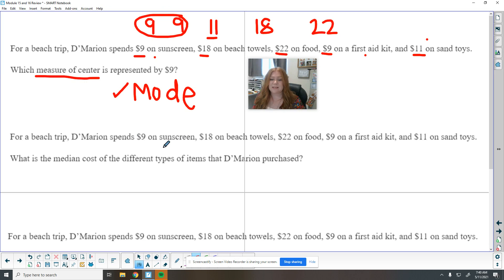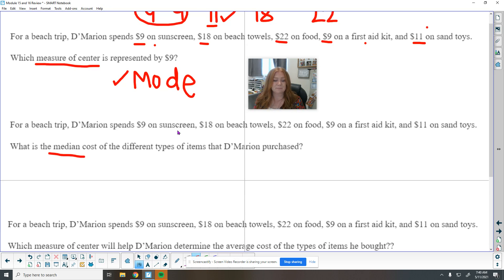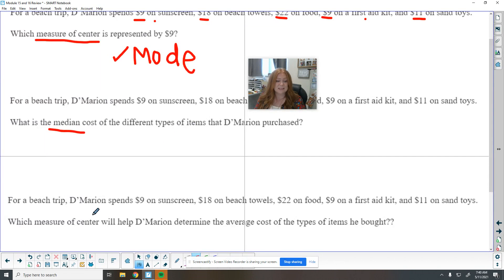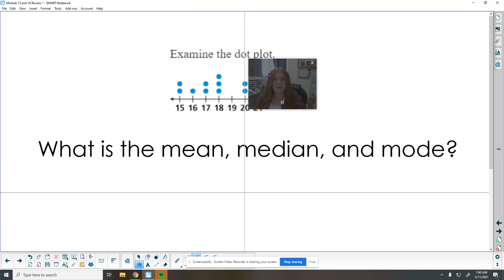So for a beach trip, same problem. He spent this on his sand toys. What is the median? And we've already put them in order. So we know our median is 11 here. And then our last problem asks, which measure of center will help determine the average cost of the items? Well, the average is another word for mean. So that is the measure of center that he would use to find the average. And it doesn't even ask what is the average. It just says which one would help him.